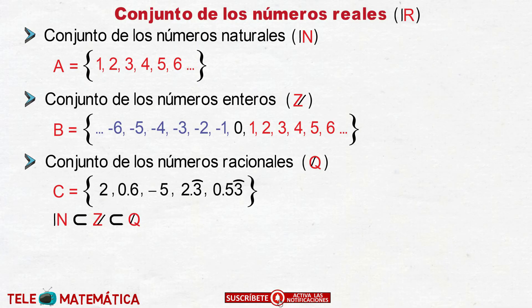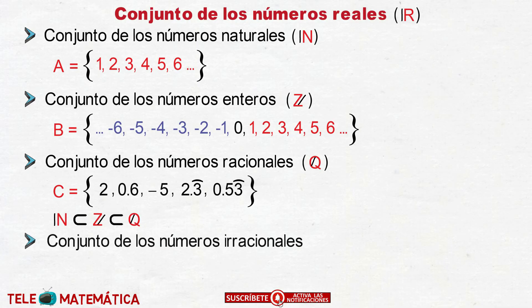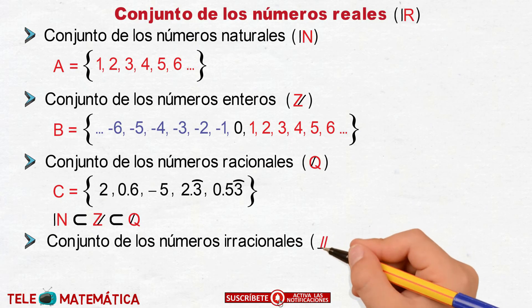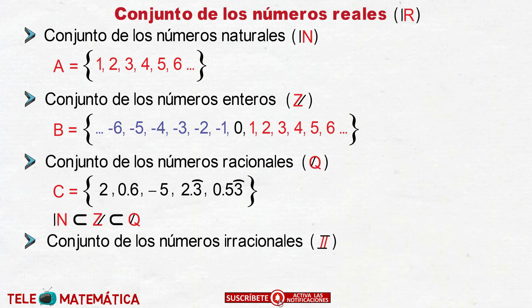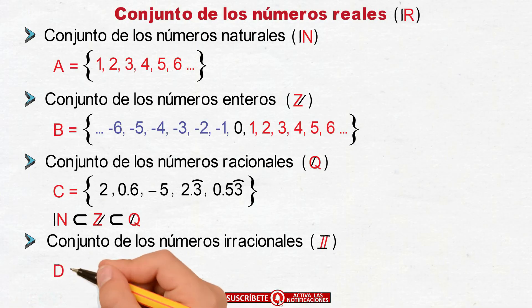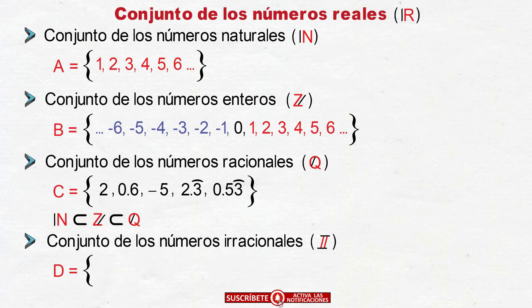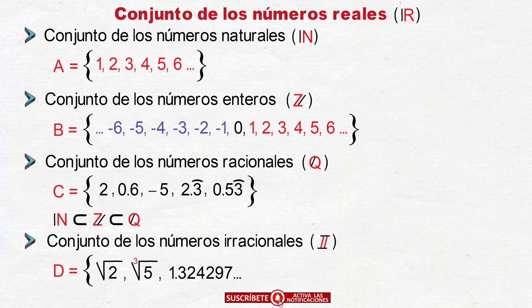En cuarto lugar tenemos el conjunto de los números irracionales, que se identifica con la letra I mayúscula, y está formado por los números que no se pueden escribir como el cociente entre dos números. Por ejemplo: raíz cuadrada de 2, raíz cúbica de 5, el número decimal infinito no periódico, y pi.